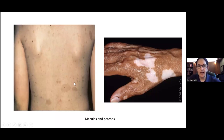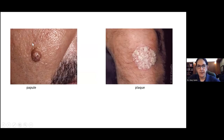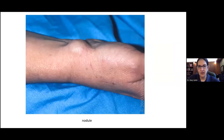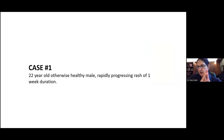Clinical examples: macules and patches — on the left, a patient with neurofibromatosis showing café-au-lait macules and patches; on the right, vitiligo. Here is a dermal nevus — a smooth dome-shaped papule. On the right is a well-circumscribed erythematous scaly plaque with whitish or micaceous scale of psoriasis. Here are vesicles and bullae — bullous arthropod bites showing blisters without much redness. And here's a big nodule of a ganglion cyst. We're going to try to use this vocabulary today.